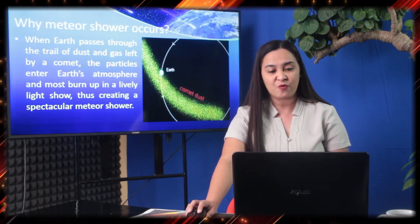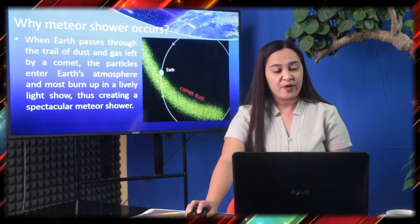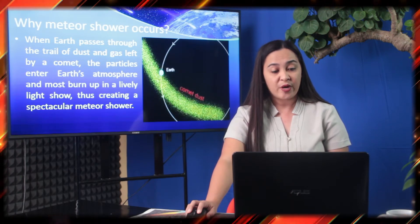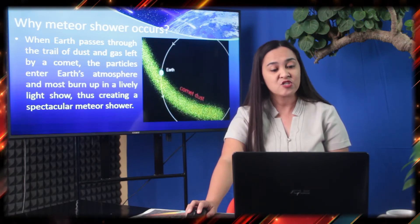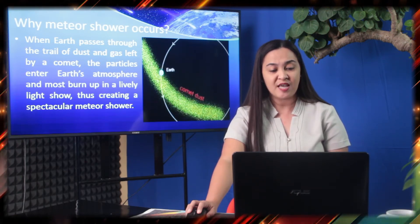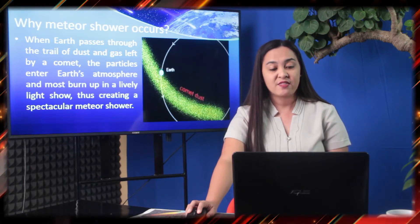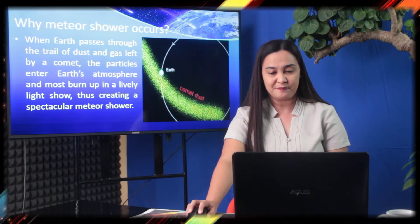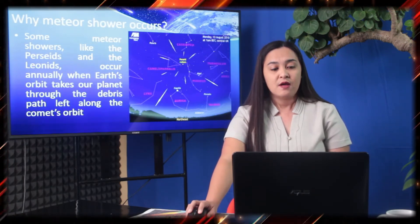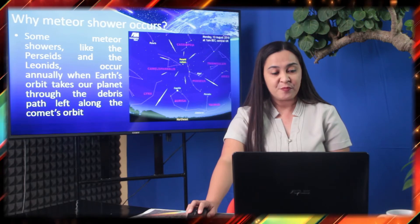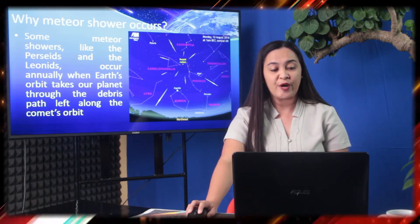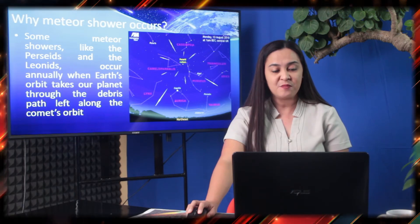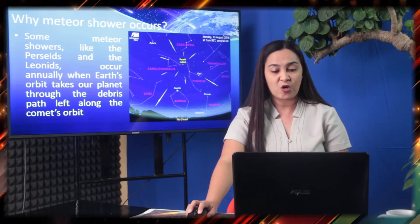Now, why do meteor showers occur? When Earth passes through the trail of dust and debris left by a comet, the particles near or enter Earth's atmosphere and burn up in a lively light show, thus creating a spectacular meteor shower. Some meteor showers, like the Perseids and the Leonids, occur annually when Earth's orbit takes our planet through the debris path left along the comet's orbit.